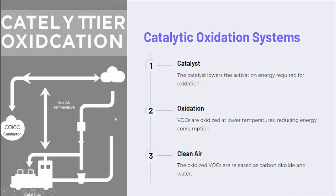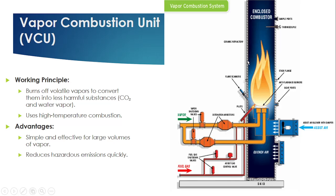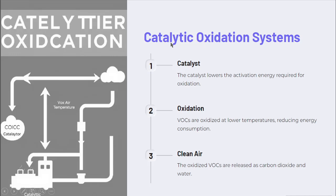Now we come to catalytic oxidation. Catalytic oxidation is a thermal oxidation process where a catalyst is used. The catalyst lowers the activation energy required for the reaction. Compared to standard thermal oxidation or vapor combustion unit where we burn gas at high temperature, in catalytic oxidation we can burn at a lower temperature with less energy. It oxidizes VOC at a lower temperature, reducing energy consumption, and similarly produces carbon dioxide and water vapor as end products.